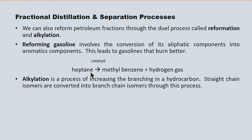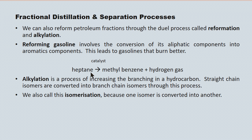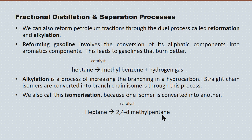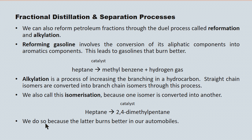Alkylation is a complementary process where we increase the branching in a hydrocarbon — straight chain hydrocarbons are converted into their branched chain isomers. It's therefore also called isomerization, since one isomer is being converted into another. Here we see heptane, which doesn't burn particularly well in an engine, being converted into 2,4-dimethylpentane in the presence of a catalyst, because the latter burns much better in automobiles.